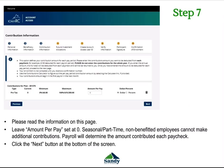Next is your contribution information. Please read the information on this page and then leave the amount per pay set at zero. Seasonal and part-time non-benefited employees cannot make additional contributions to their 457 accounts. The payroll department will determine the 7.5% of gross earnings that will be contributed to the 457 account each paycheck. Once you have finished this, click the Next button at the bottom of the screen.